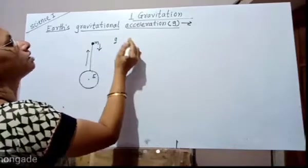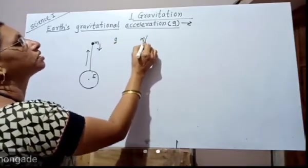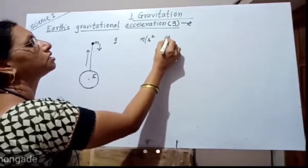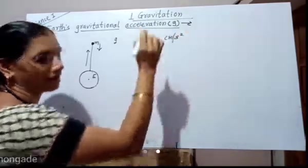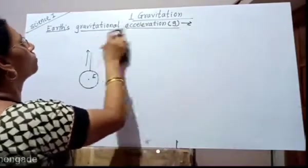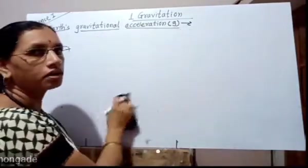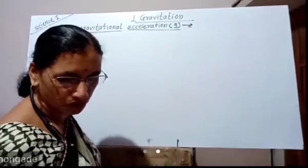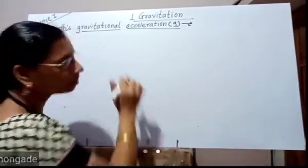It is an acceleration, and therefore its SI unit is meter per second square. The CGS unit is centimeter per second square. Now we have to calculate the value of g on the surface of the earth.